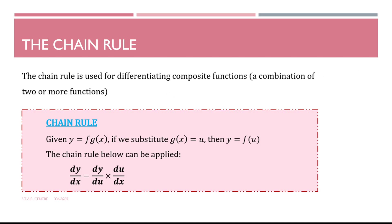So let's look at the actual chain rule. The chain rule is used for differentiating composite functions. A composite function is a combination of two or more functions. When using the chain rule, we have a function of the form y = f(g(x)), and we make a substitution to make differentiation easier. If we let one function be u, then y becomes a function of u and the chain rule can be applied: dy/dx equals dy/du multiplied by du/dx.